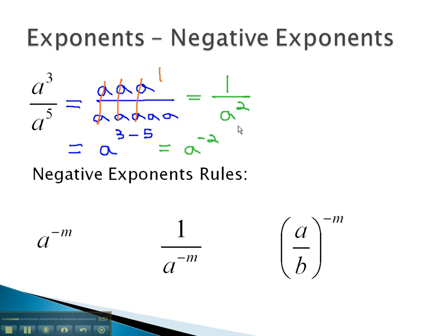Notice that our negative exponent is the same as 1 over a to the positive exponent of 2. A negative exponent simply means all the a's have divided out in the numerator, leaving a's behind in the denominator.